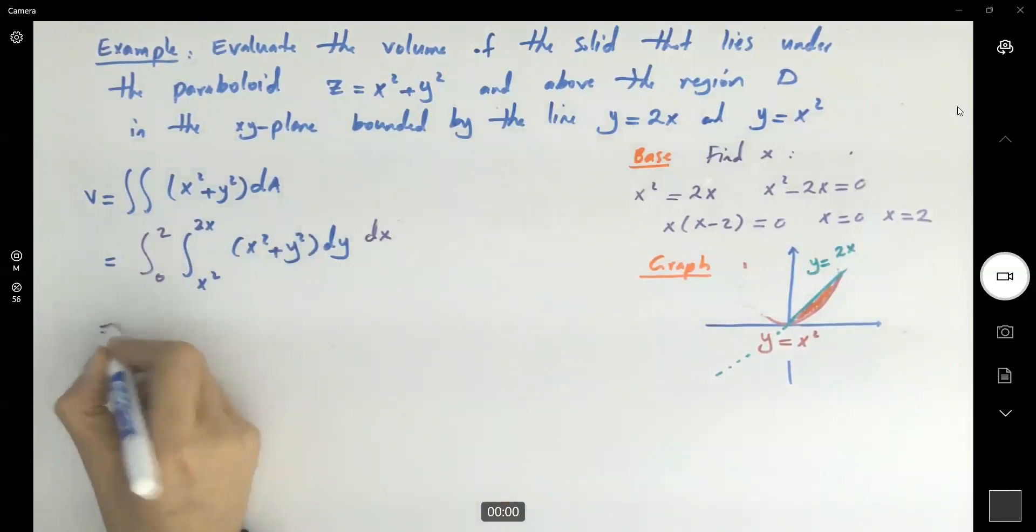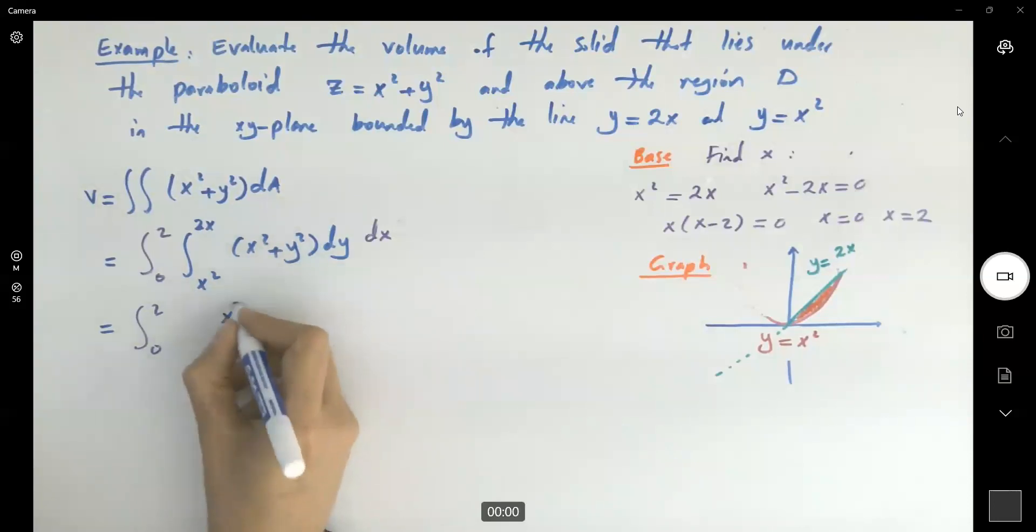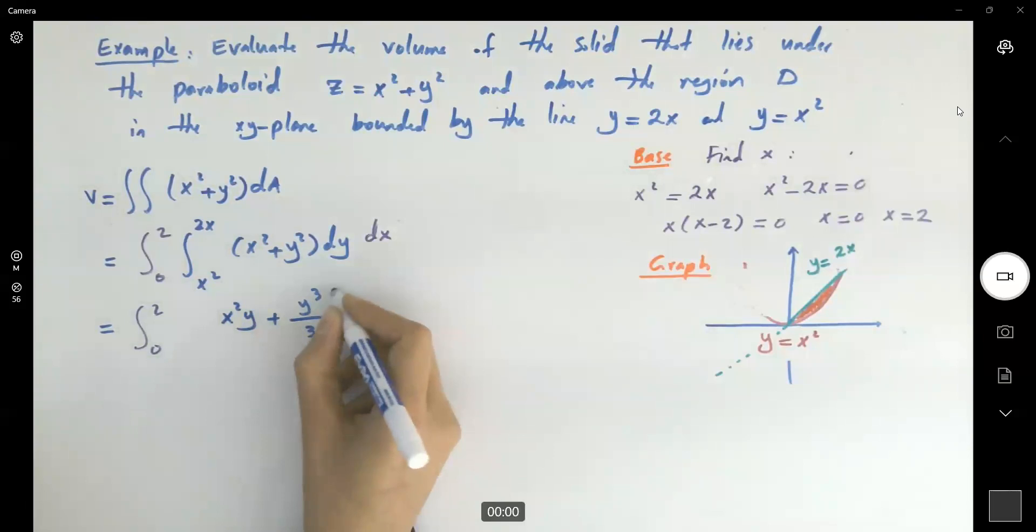So let's calculate this inner integral then the outer integral 0 to 2. Here we go. With respect to y, you have x squared y plus y cubed divided by 3, and your y is starting from x squared and it stops at 2x.